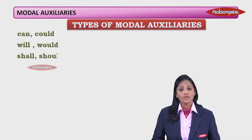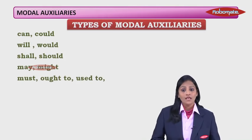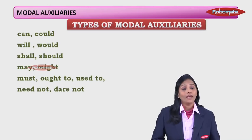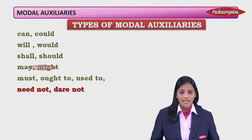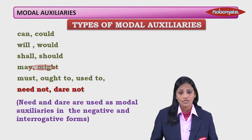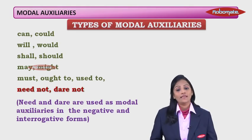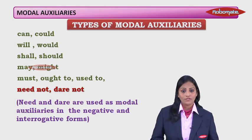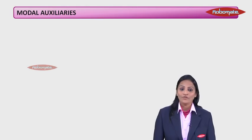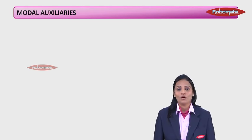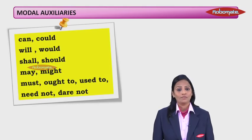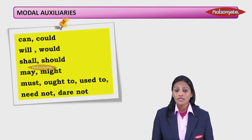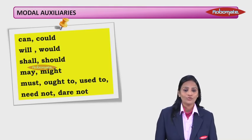Examples of modal auxiliaries: can, could, will, would, shall, should, may, might, must, ought to, used to, need, dare — and also need not and dare not, or in question form. Need and dare are used as modal auxiliaries only in the negative and interrogative forms.